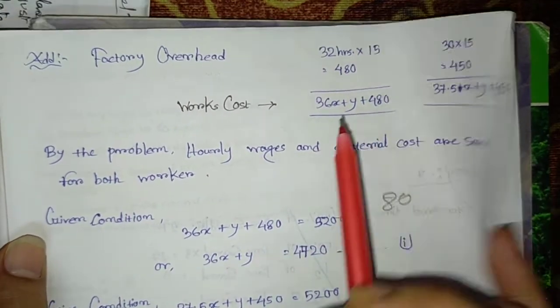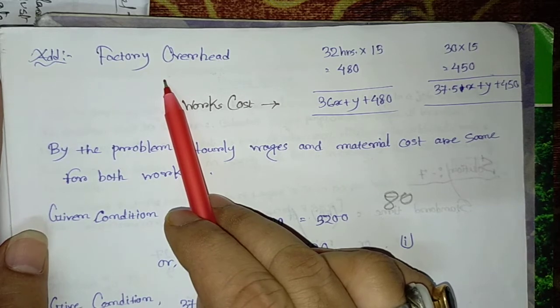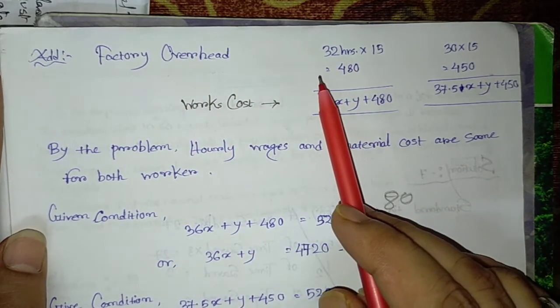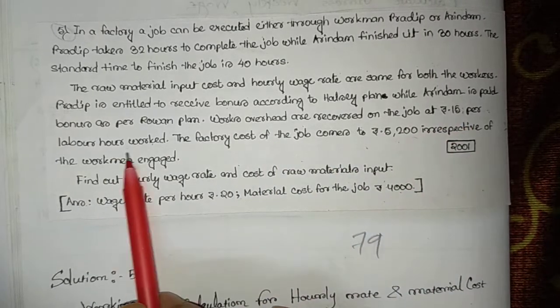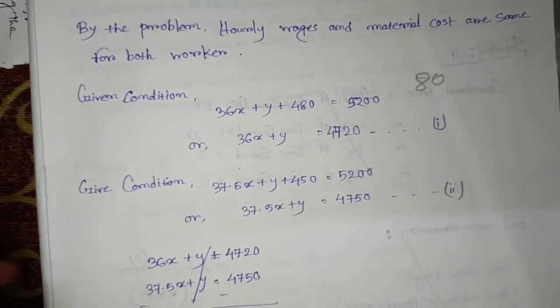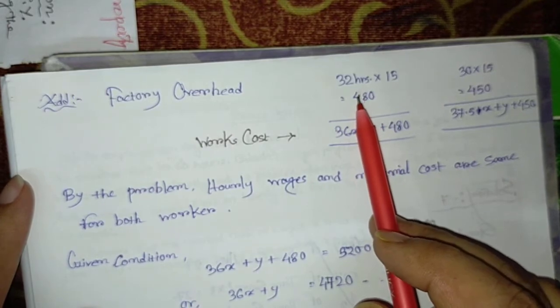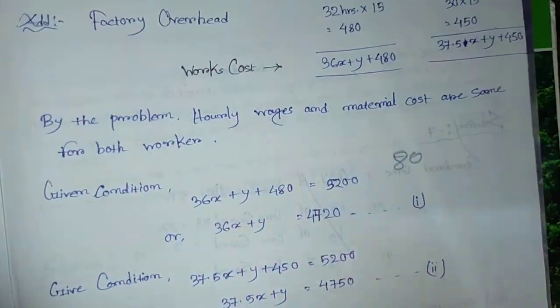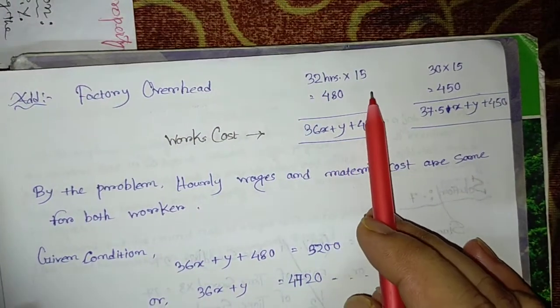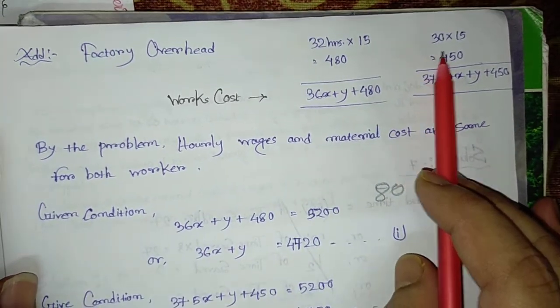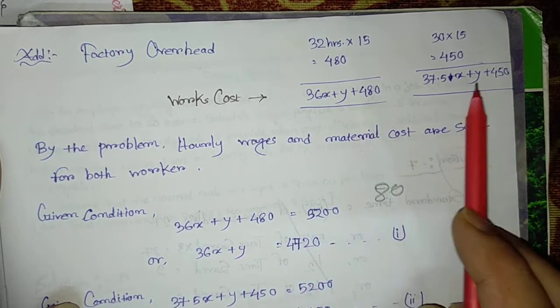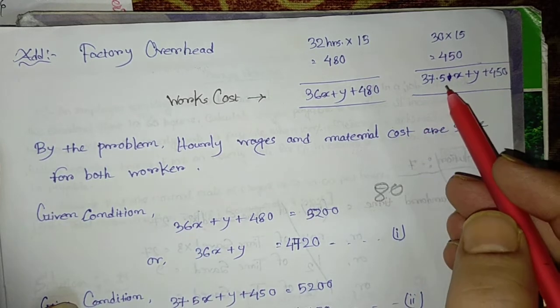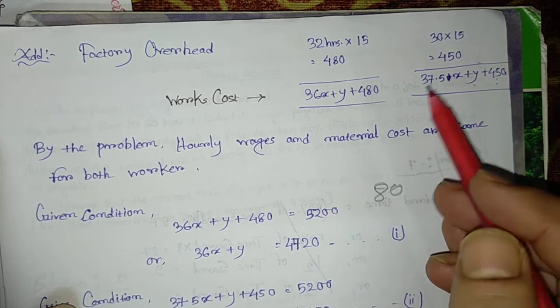We have to calculate works cost. In works cost, we add factory overhead to prime cost. In the problem, works overhead are recovered on the job at rupees 15 per labor hour worked. How many hours of work was done? First worker was Pradeep. Pradeep's actual time taken was 32 hours, so 32 hours into 15 equals 480. And in case of Aurindam, it is 30 hours time taken, 30 into 15 equals 450. Prime cost was 36x plus y, with that 480 is added. And here also 37.5x plus y prime cost, with that factory overhead 450 is added. This is your works cost.